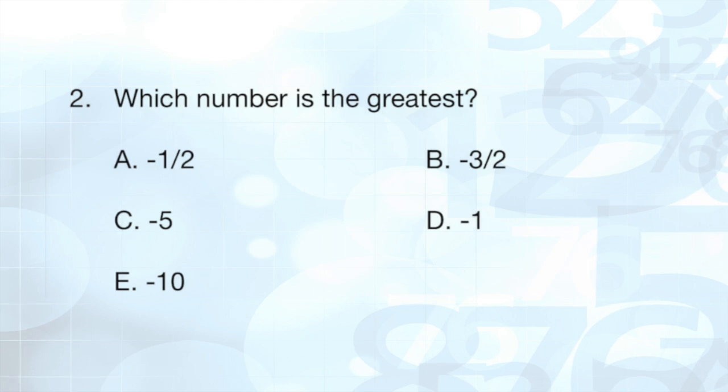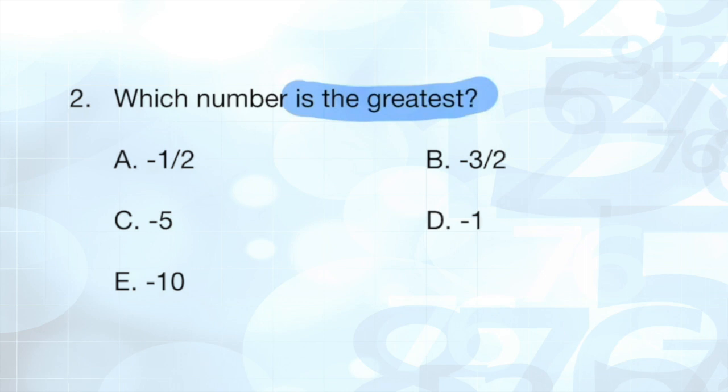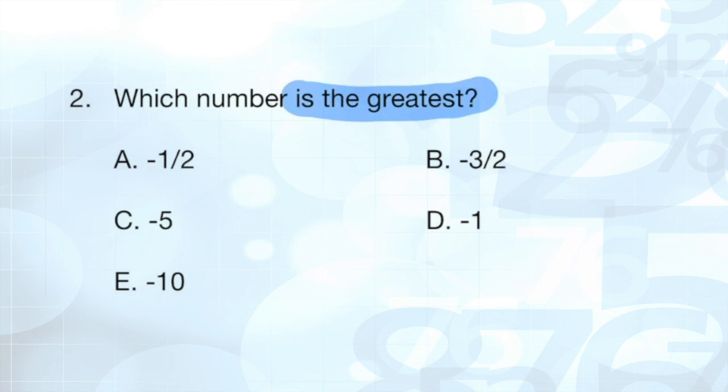Question 2. Which number is the greatest? Now, all of these answer choices are negative. If we even had one positive value, we would have known that that one positive value would have been the greatest. Since we don't have any positive values, we're going to be looking for the number that is closest to a positive value. We could even say, since these are all negative, which is the closest to zero? That's going to tell us which number is the greatest.